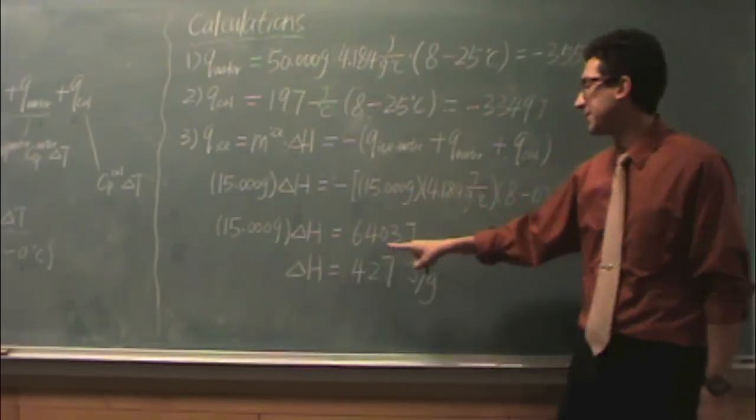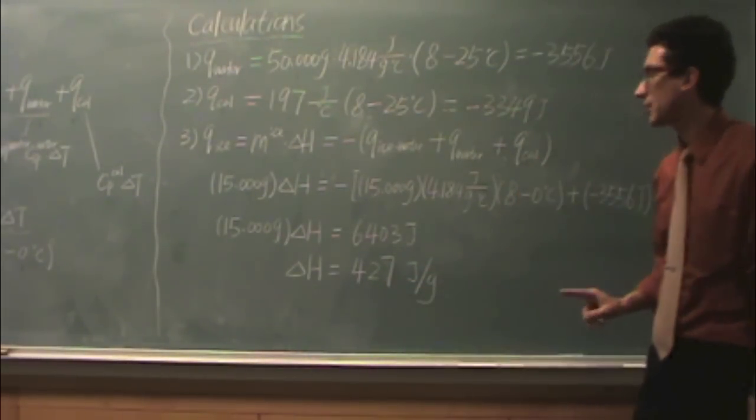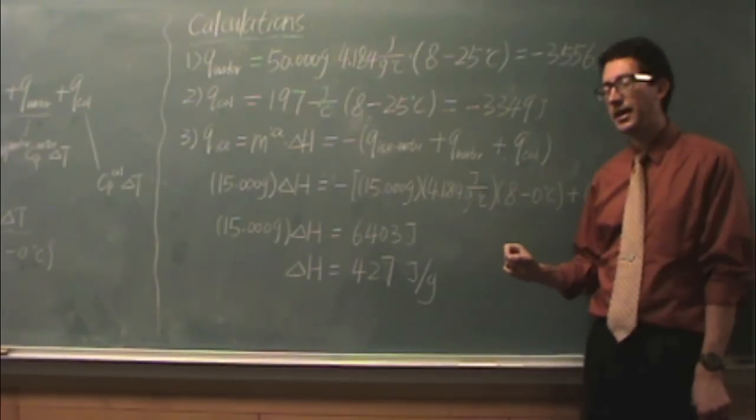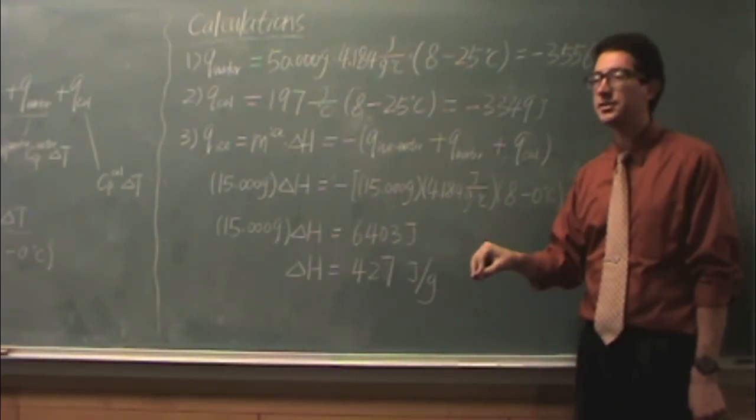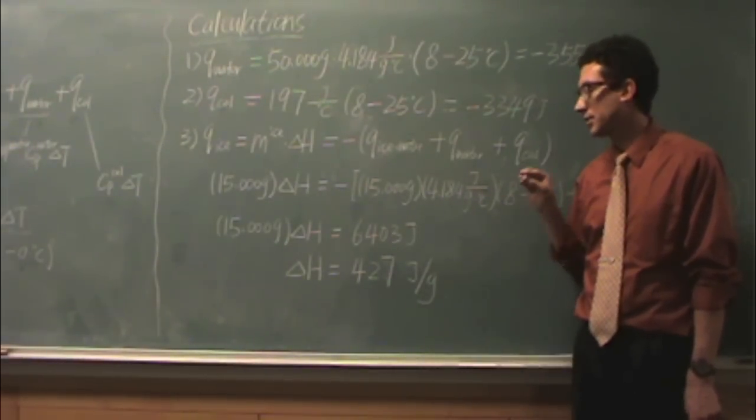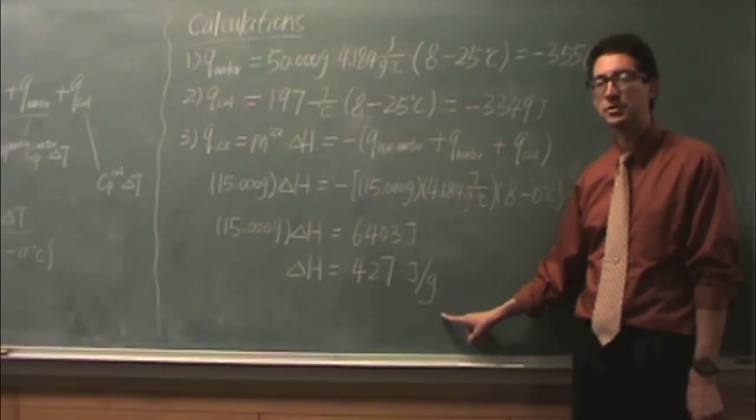You finally divide by that 15. And you should get a delta H of 427. That should be a positive number, because in order to melt ice, you have to put energy into the system to cause the ice to melt and go into a liquid. So, because that's an endothermic process, it's a positive number. This will be a joules per gram.